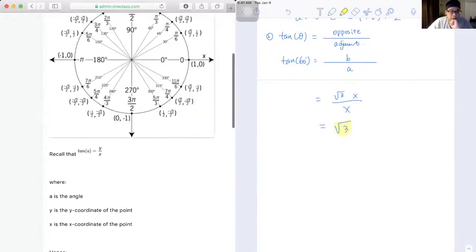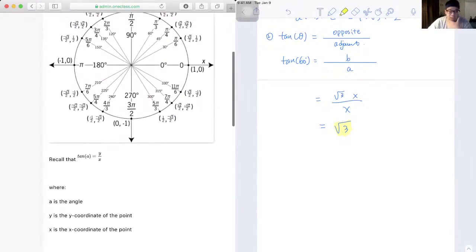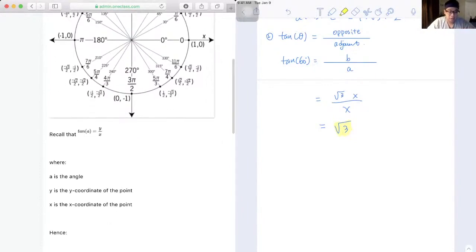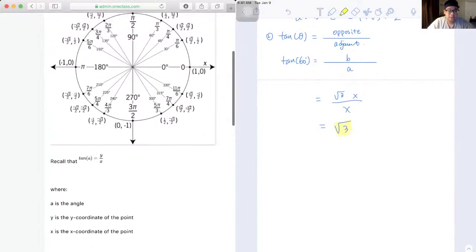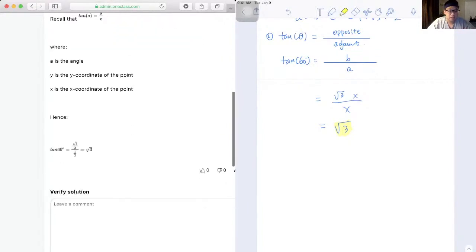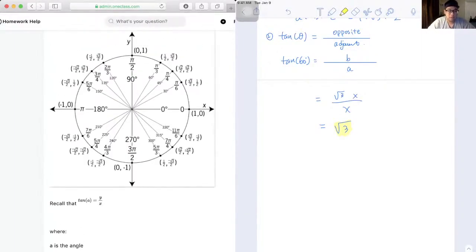Okay, and yes, still tangent θ is equal to y over x, where y is the y coordinate of the point, and x is the x coordinate of the point. So we just need to find 60, and then we use the y coordinate over x coordinate.